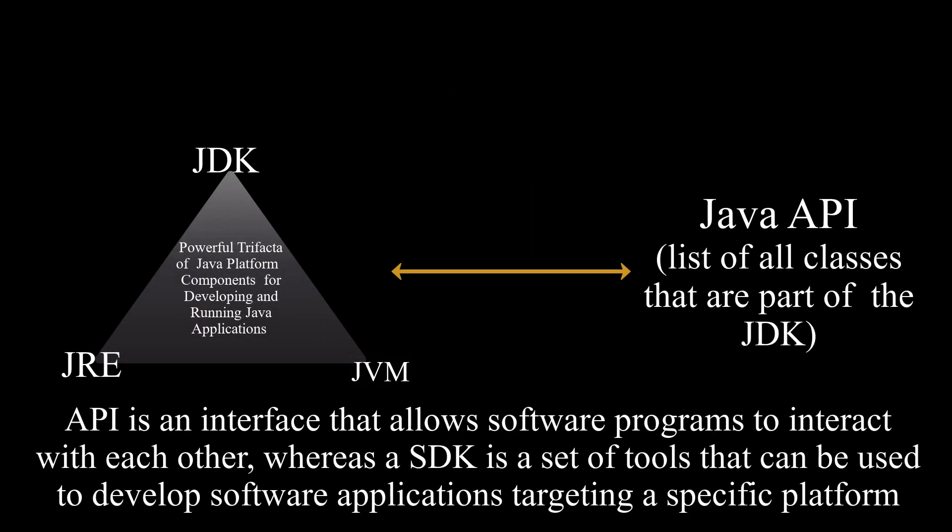Now that we understand what the role of the Java Virtual Machine, Java Runtime Environment, and Java Development Kit are, we can better understand what Java API is. Java API is the interface by which we request service from.